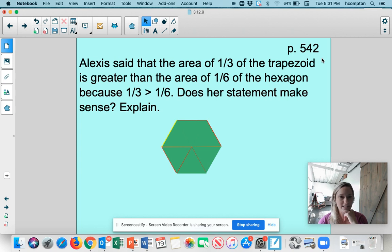So here it is. Alexis said that the area of one-third of the trapezoid is greater than the area of one-sixth of the hexagon because one-third is greater than one-sixth. Does her statement make sense? Explain. All right, so let's all stop to think about that.